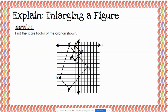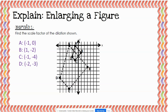Looking at the pre-image: A is located one unit to the left, so its coordinates are (-1, 0). B is one right and two down, so B is at (1, -2). C is one left and four down, so C is at (-1, -4). D is two units left and three units down, so D is at (-2, -3).